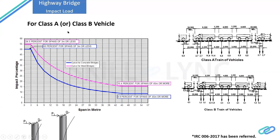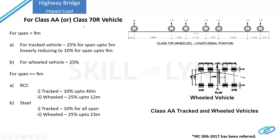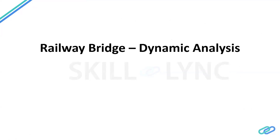The next graph shows class AA and class 70R vehicles. For class 70R and class AA, the impact factor is classified as follows: for span less than nine meters, tracked vehicles have 25%; for span up to five meters, linearly varying to 10% for span up to nine meters; for wheeled vehicles it is 25%. For RCC bridges and steel bridges the values differ. Based on the wheel configuration — tracked or wheeled — we compute the appropriate impact factor for highway bridges.